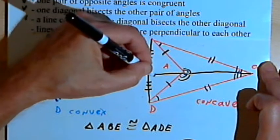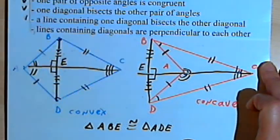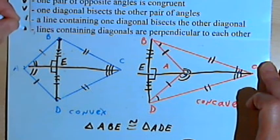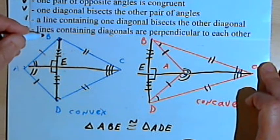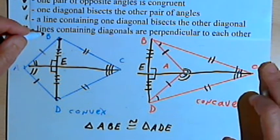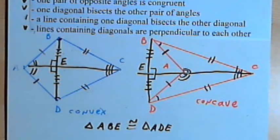And we can show the same thing for the concave kite as well. So the lines containing the diagonals are going to be perpendicular to each other. And I guess that's it for kites. Take care. I'll see you next time.